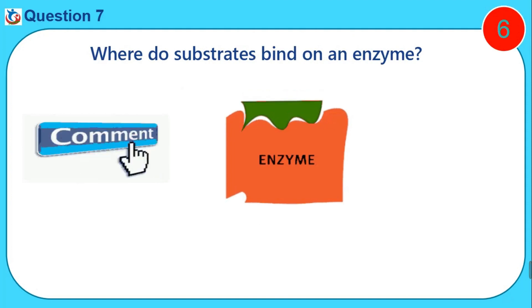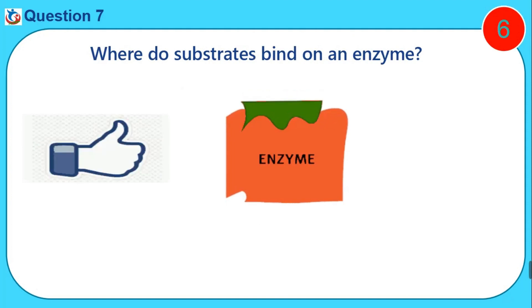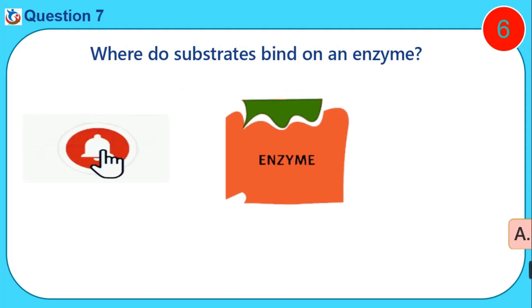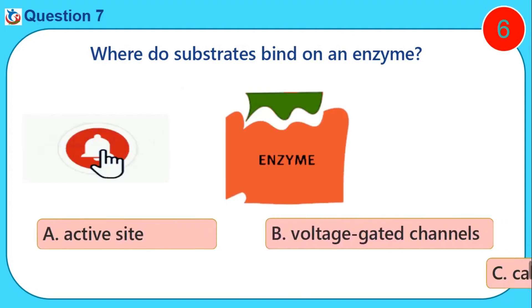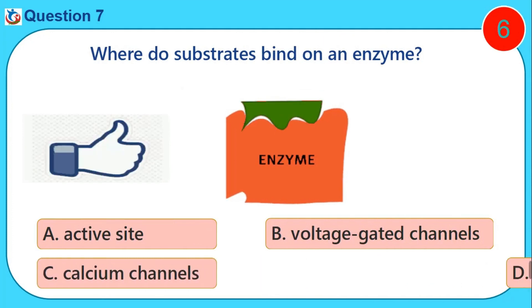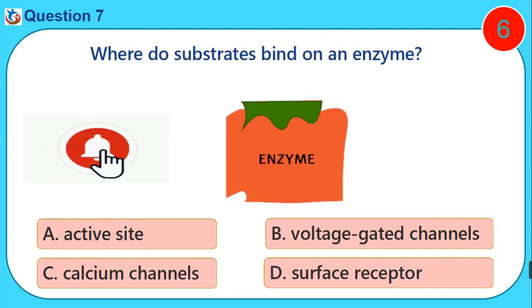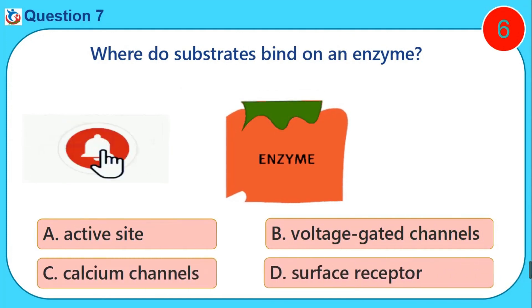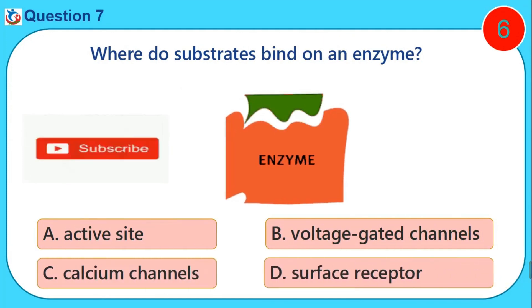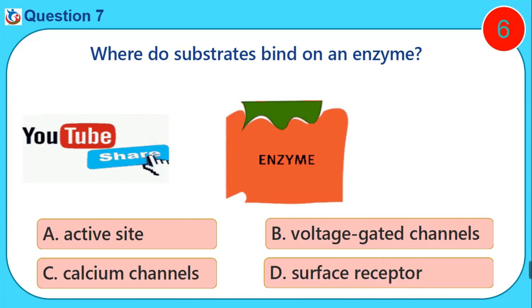Where does the substrate bind on an enzyme? A. Active site. B. Voltage gated channels. C. Calcium channels. D. Surface receptor.